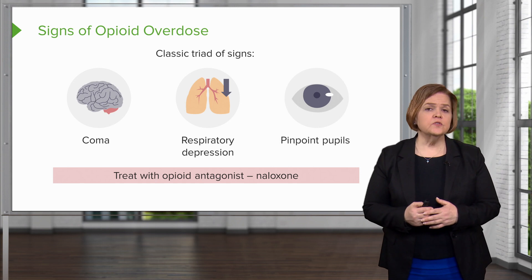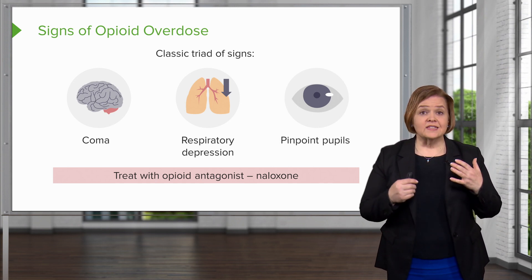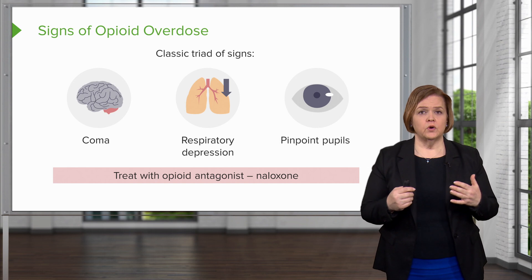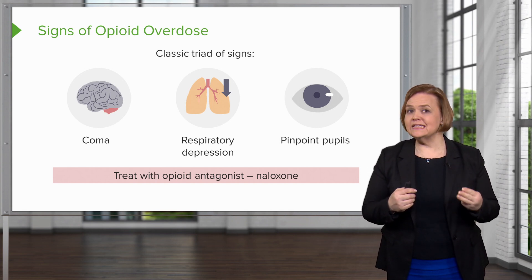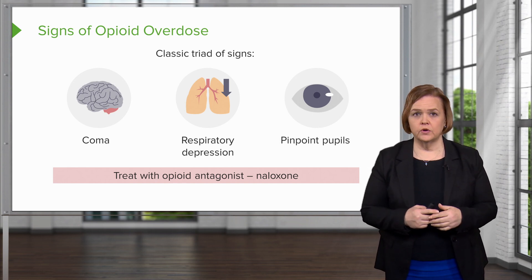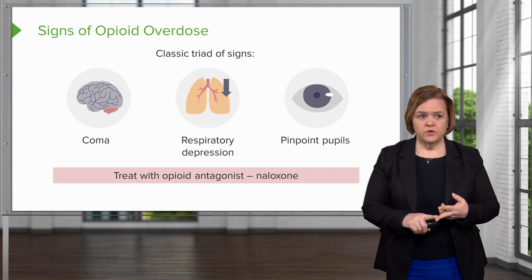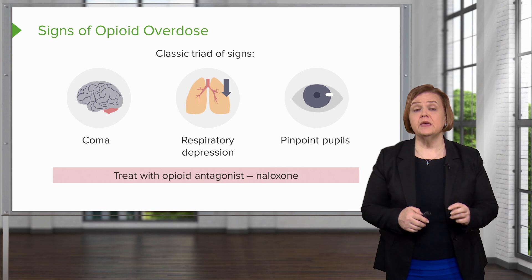You'll see this referred to in the literature as the classic triad of signs of opioid overdose — just meaning the classic three signs. The patient is not responsive; they're in a coma. Their respiratory rate will be slow and shallow. And they have pinpoint pupils.